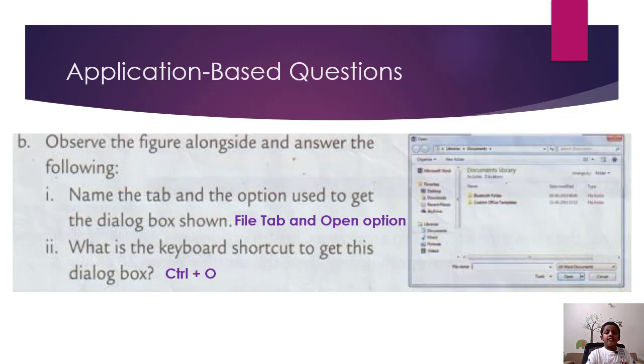B. Observe the figure alongside and answer the following. Name the tab and the option used to get the dialog box shown. So the answer is file tab and open option.